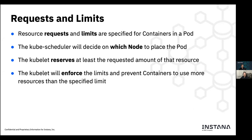Limits tell Kubernetes the threshold that a workload shouldn't exceed — it shouldn't consume more than X amount of CPUs or X amount of bytes of memory. The Kubernetes scheduler will decide in which node the pod will run depending on the availability of resources in that node and the requests configured for that workload. The kubelet will reserve at least the amount of resources that were requested in the node to make sure they are available for the container, and also enforces that the limits are respected to prevent other containers from having fewer resources than they need.